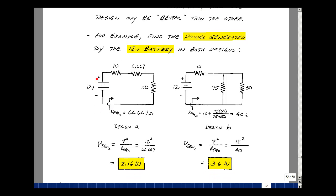So this battery is generating 2.16 watts and this whole circuit is consuming 2.16 watts. The second design, the parallel combination here of the 75 and the 50 we saw was equal to 30 ohms. Plus now adding the 10 in series gives us 40. It's 12 squared divided by 40, 3.6 watts.